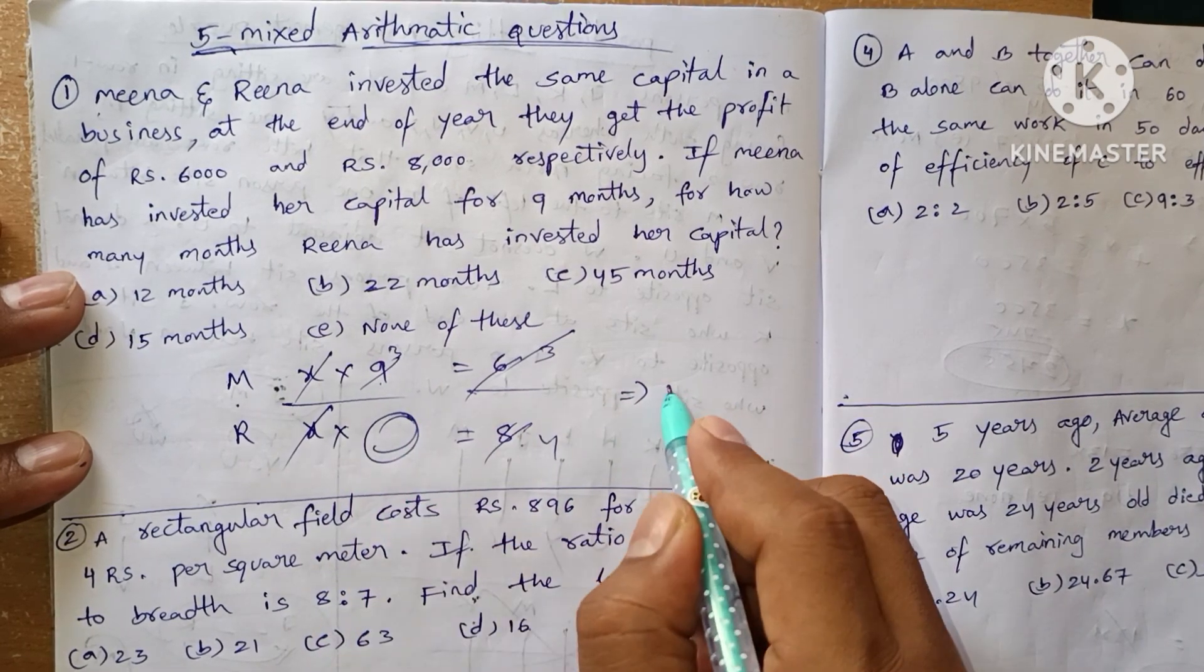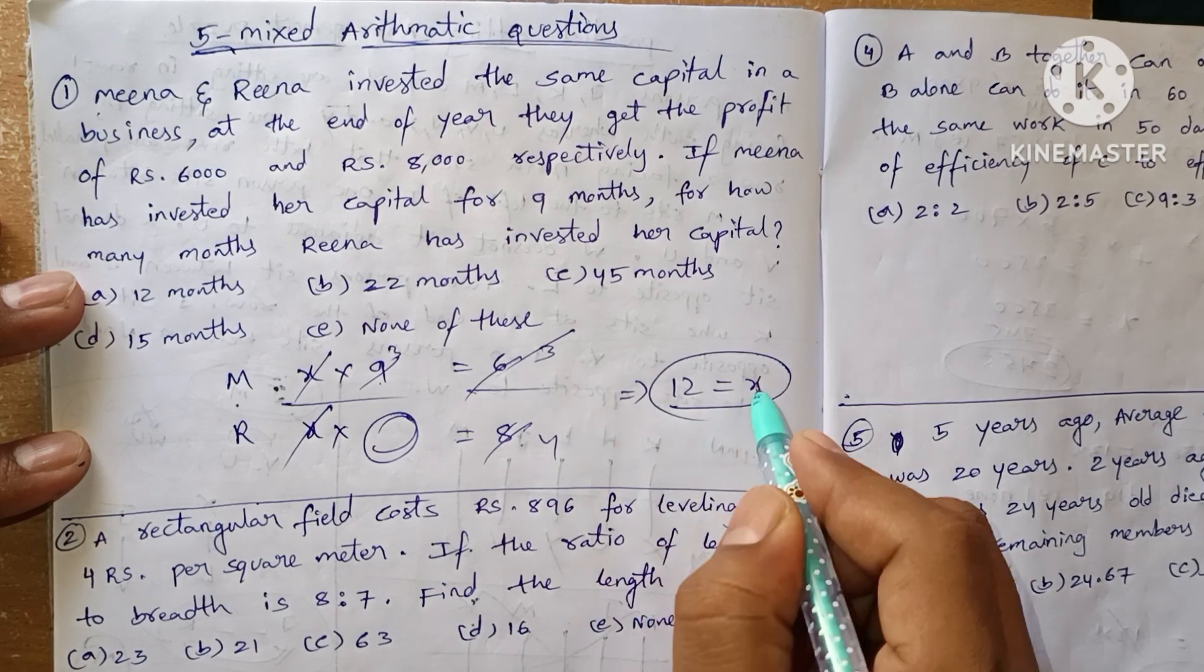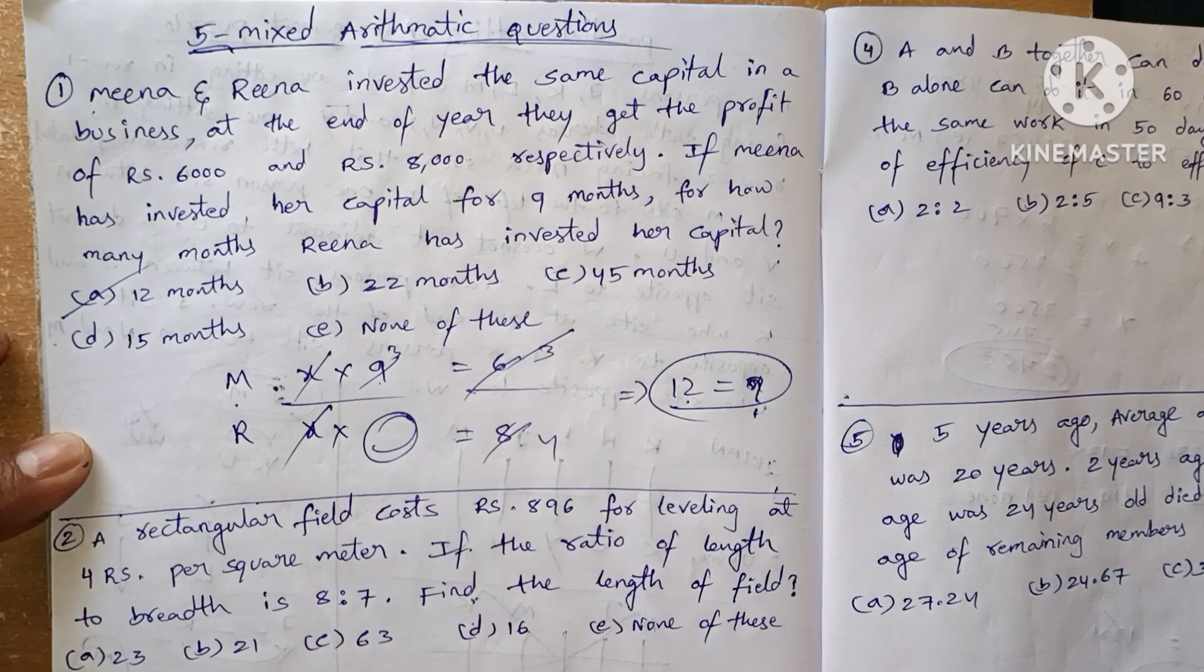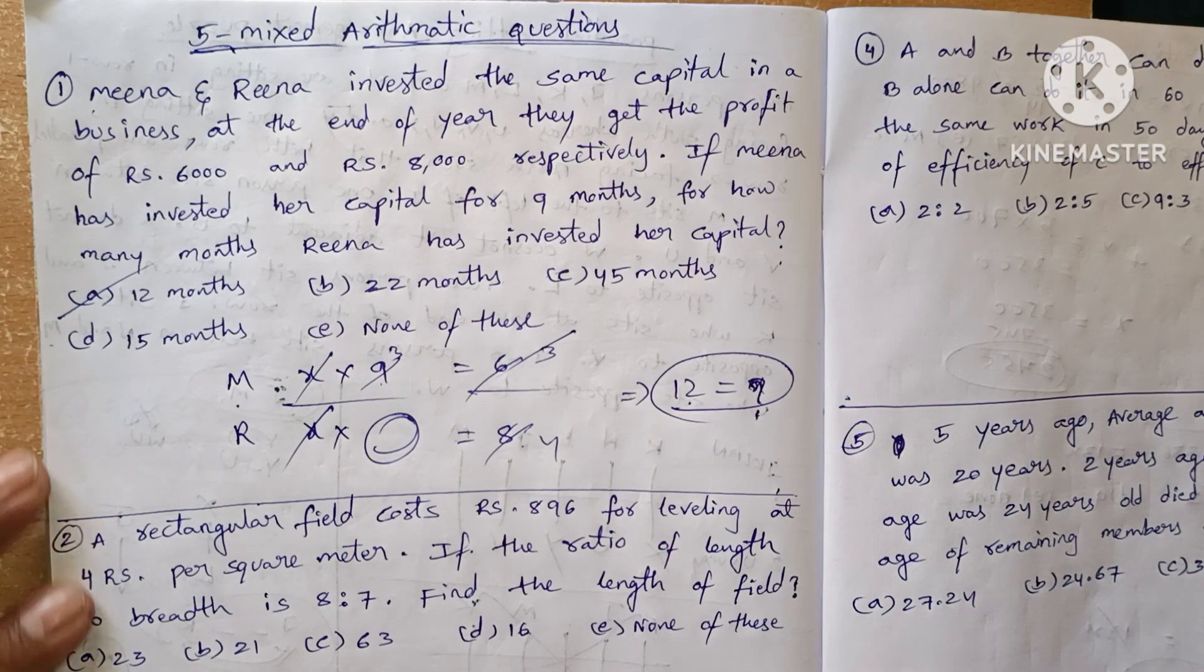This value is 12. So our answer is option A, 12 months. Now we are going to see question number two.